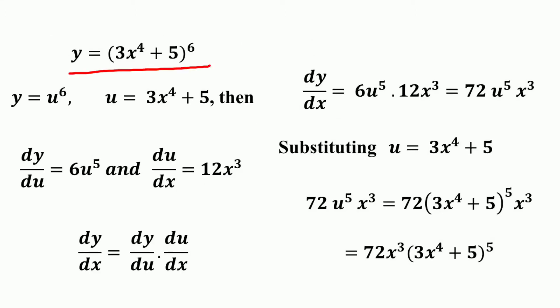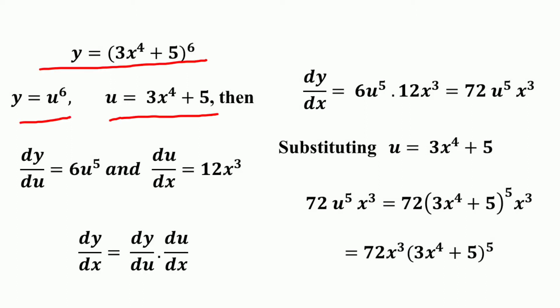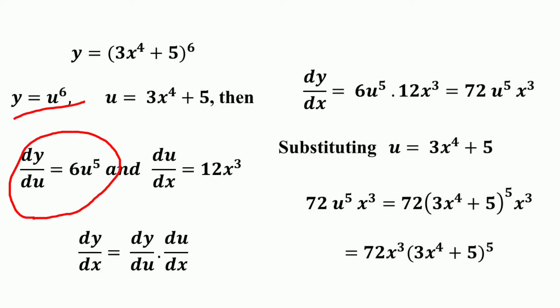Consider the function y equal to (3x⁴ + 5)⁶. We set u equal to 3x⁴ + 5, so we have written y in terms of u and u in terms of x — giving us a composite function of two variables. Now firstly we are going to take the derivative of y equal to u⁶.